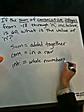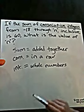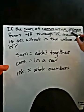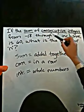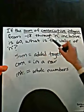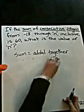So this problem, as it reads, says if the sum, or the numbers added together, of consecutive integers, so if you add all the numbers in a row together, starting from negative 18 and going on through n, inclusive, is 60, what is the value of n? That's still a little confusing, but we'll break it down.